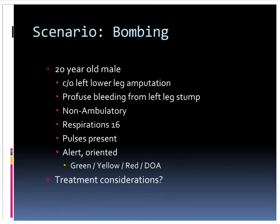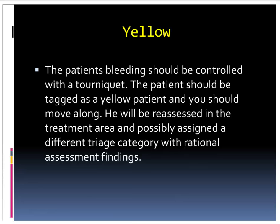A 20-year-old male has an amputation to his left lower leg and is bleeding profusely from the stump. He's not able to walk, breathing 16 times a minute, still has a pulse at his wrist, and is alert and oriented. This is one of the few times we actually perform an intervention — we apply a tourniquet to his leg. If that stops the bleeding and he still has a radial pulse and meets RPM criteria, that's going to be a yellow patient. Let's find patients with bleeding that can't be controlled with a tourniquet — those are the ones we need to get to the hospital quickly.